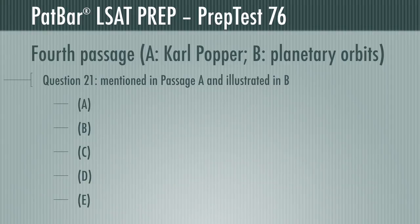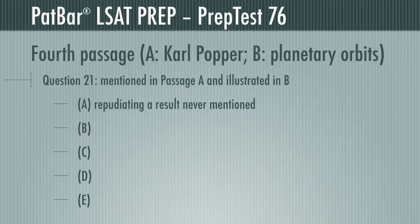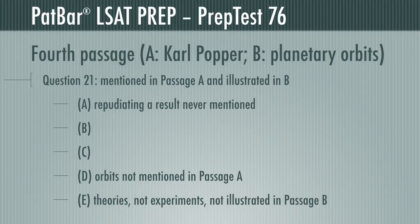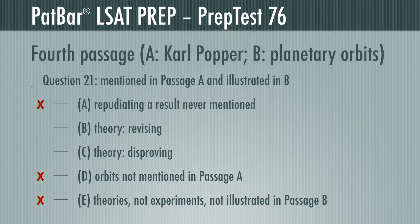Question 21 asks directly for something mentioned in Passage A that is then illustrated in B. Only two responses are possible here. Repudiating a result is never discussed. Planetary orbits are not mentioned in A. Theories and auxiliary assumptions are illustrated in B, but nothing about experiments. This leaves revising a theory and disproving a theory. Neither passage mentions revising a theory — specifically, if it fails, it's false, or an auxiliary assumption is false. What is applied may be revised, but not the theory. B is incorrect. Since Passage A mentions when a theory must be false, and Passage B shows replacing a theory with another to make the correct prediction, C is correct.